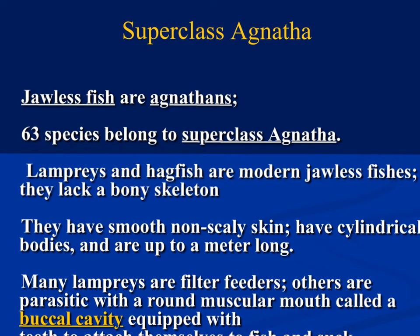Starting off with the superclass Agnatha — these are jawless fish. That's important to know: Agnatha means jawless fish. Lampreys and hagfish are the modern jawless fish still present today. The lamprey is one of the organisms that we have dissected in the past. They are filter feeders, and many are parasitic.